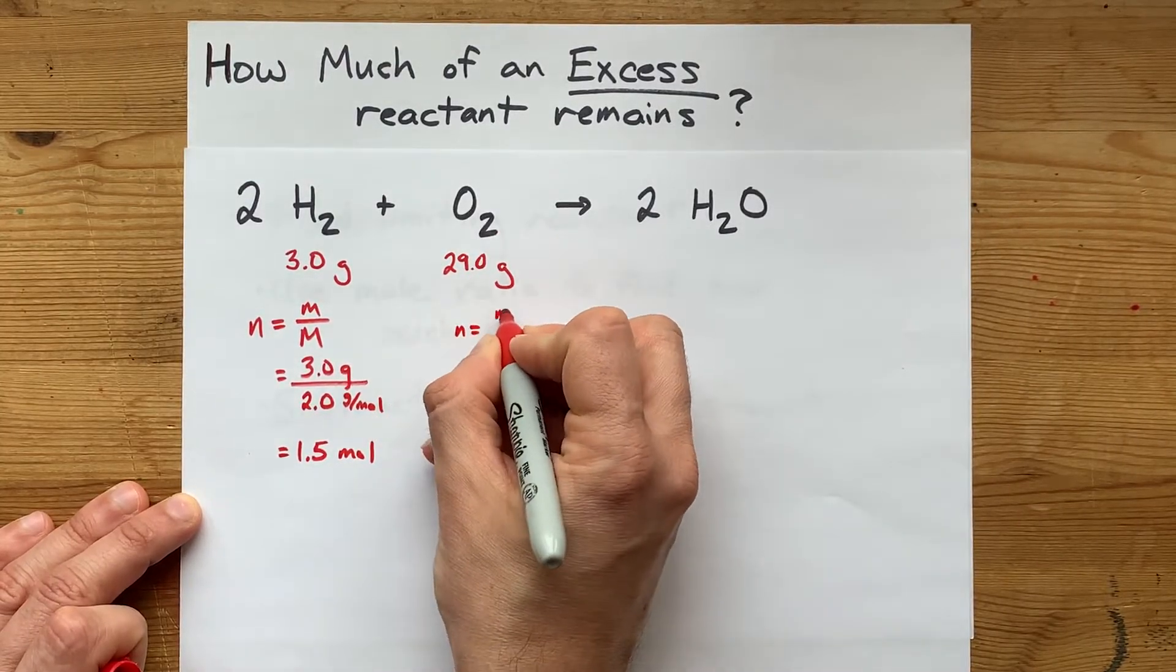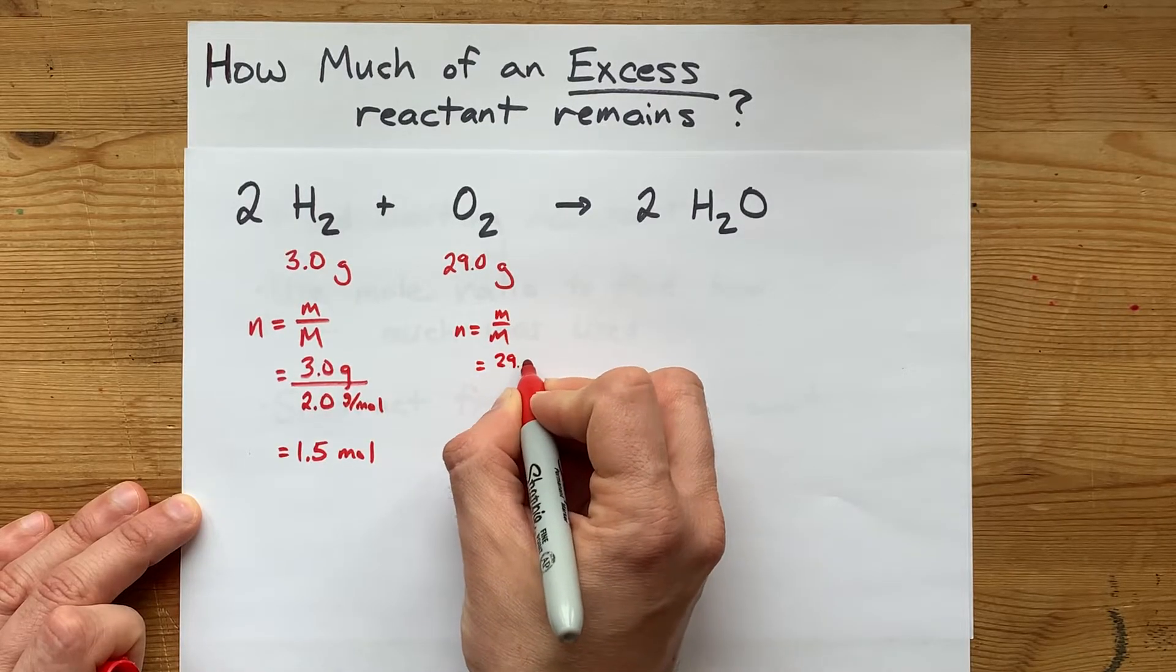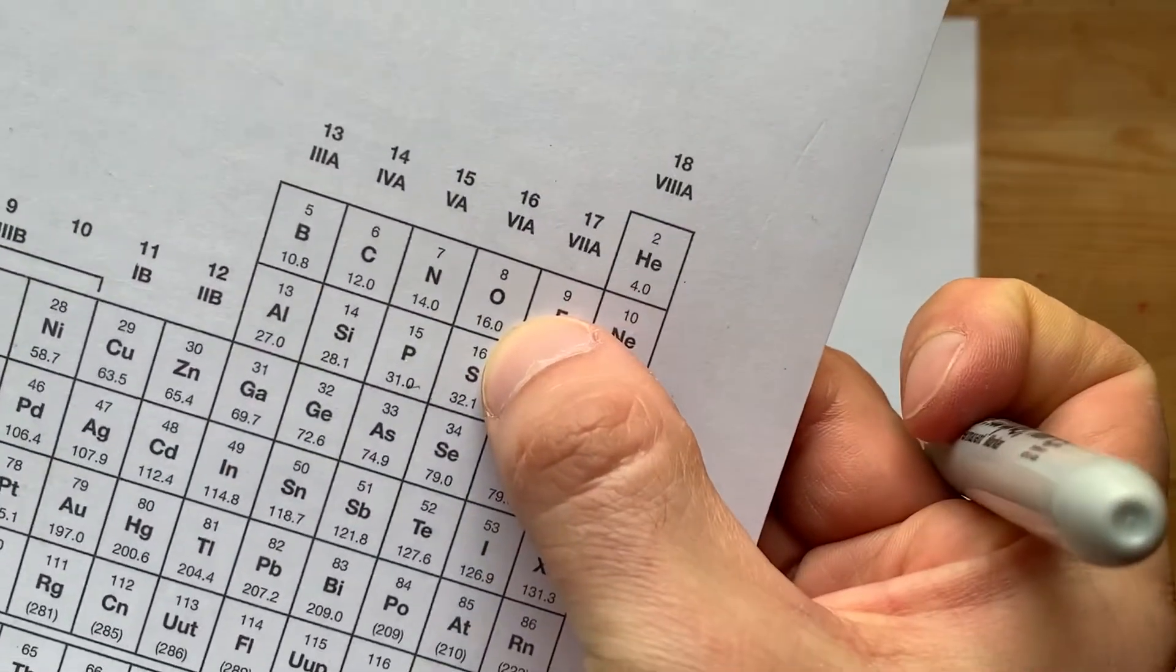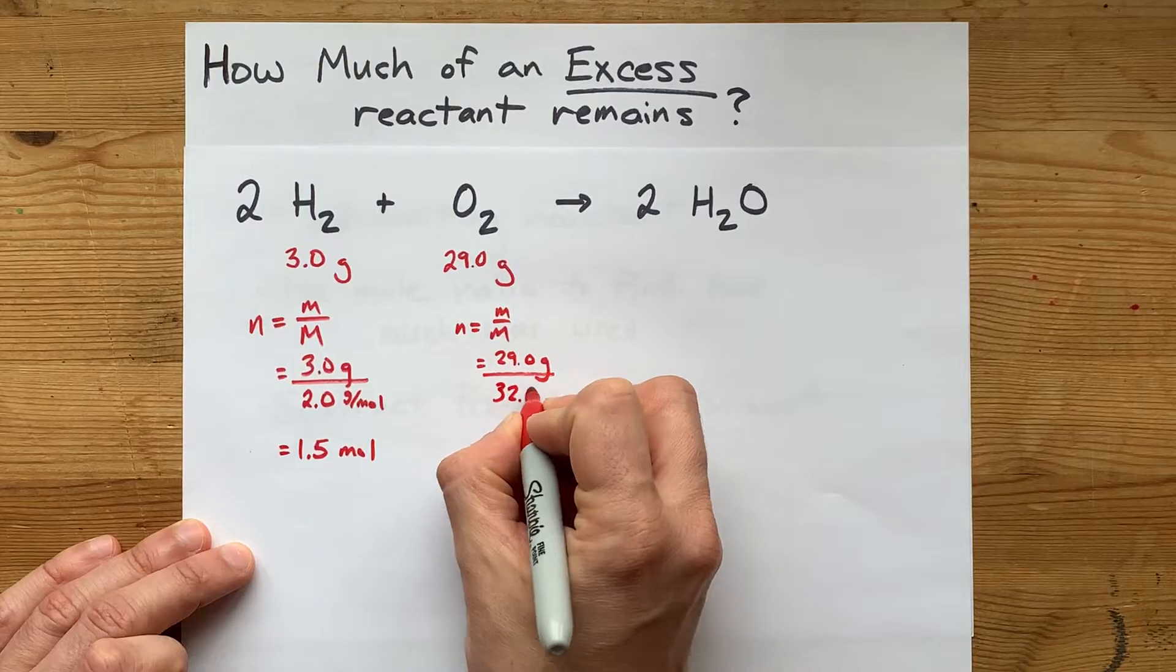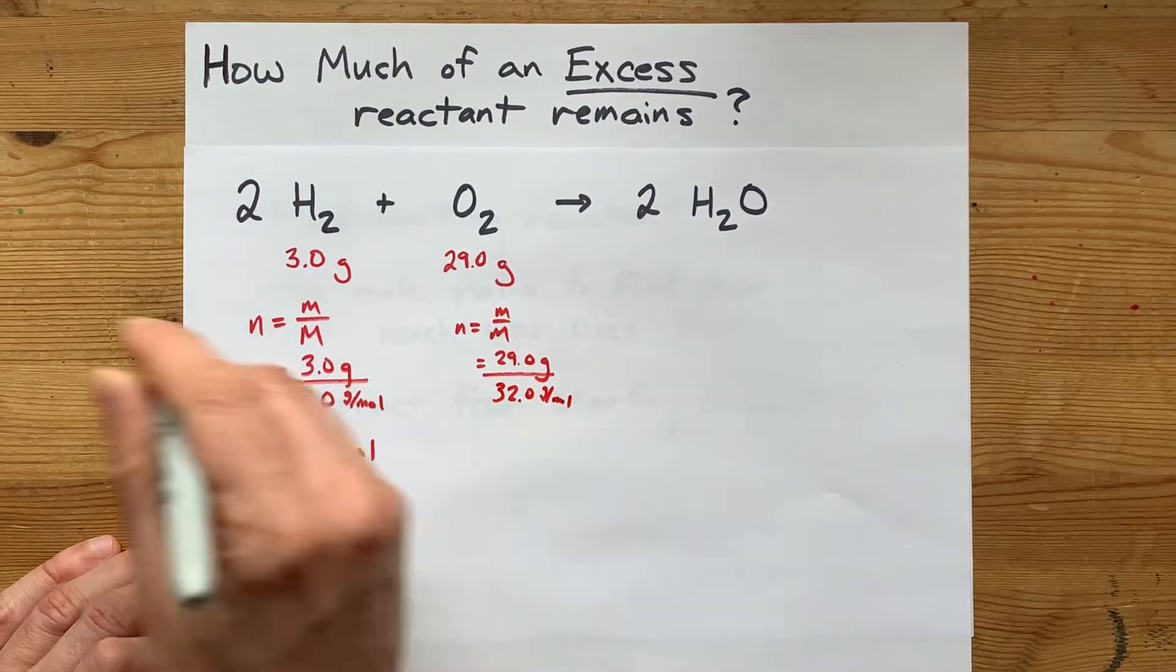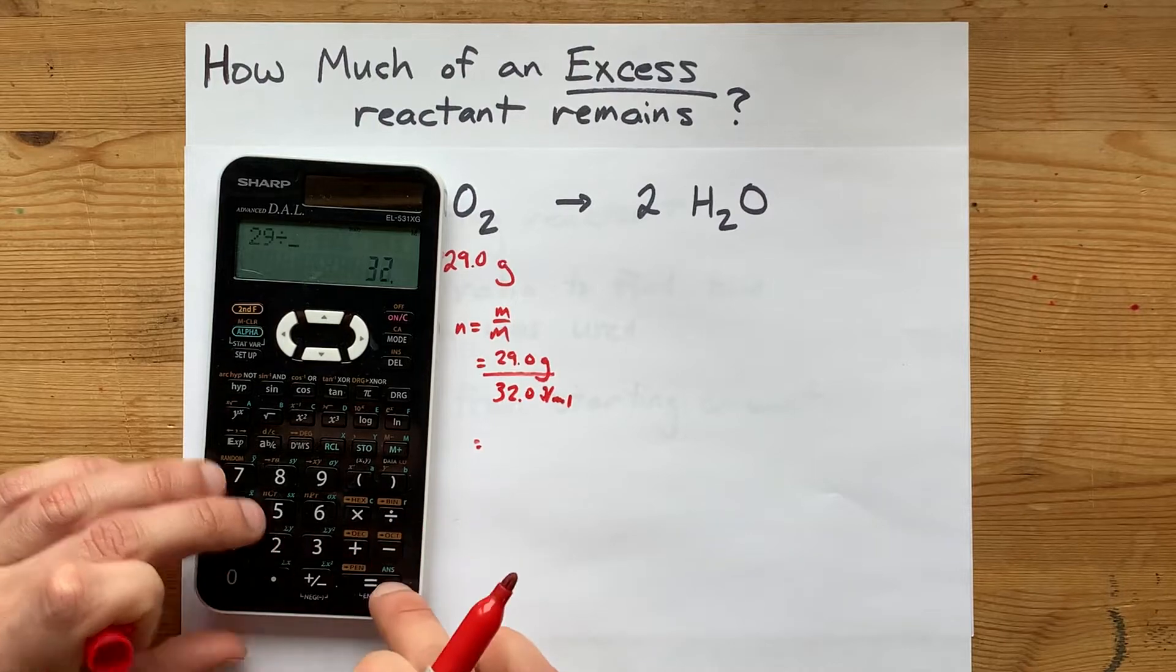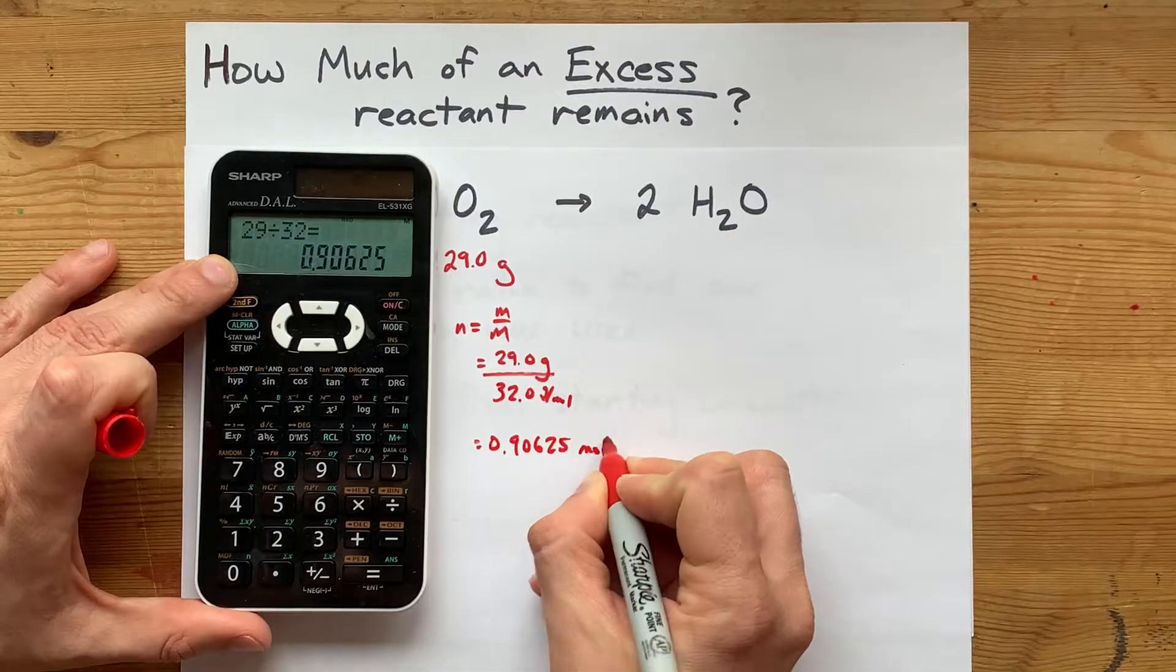Oxygen will be the same, mass divided by molar mass. That's 29 grams divided by, oxygen weighs 16, so O2 weighs 32 grams per mole. And 29 divided by 32 gives me 0.90625 moles.